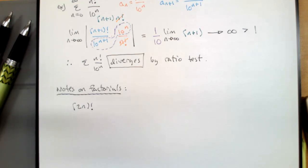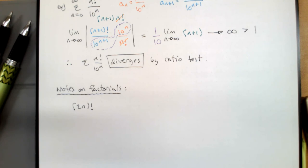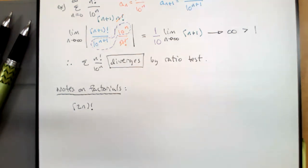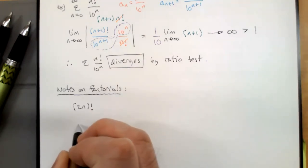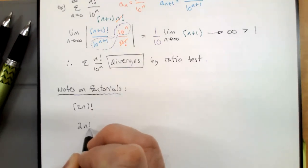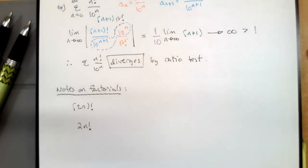Sometimes we'll encounter (2n) factorial as opposed to 2 times (n factorial). This is why English is a terrible language. With parentheses, you multiply by 2 first and then do the factorial. Without parentheses, you do the factorial first and then multiply by 2 — that just gives an extra factor of 2. These are different things.